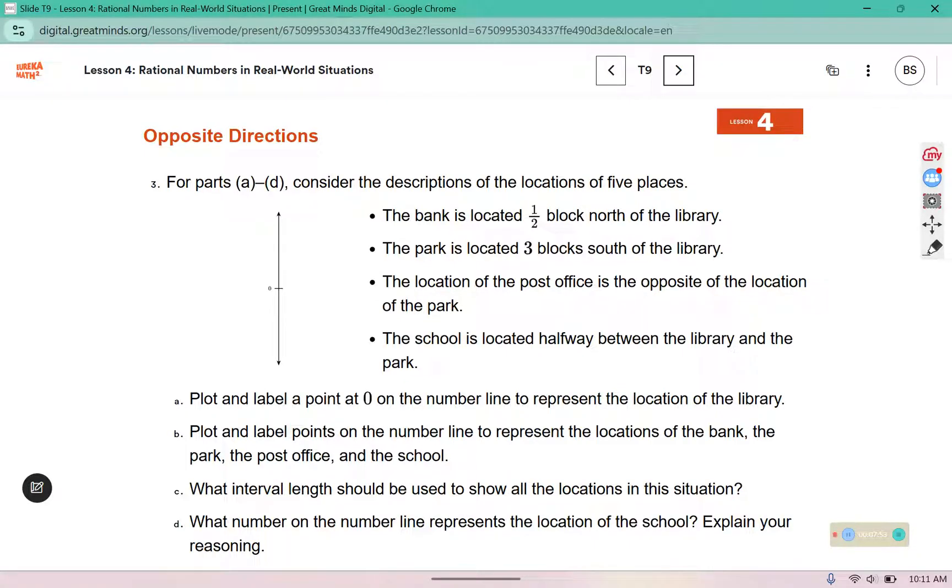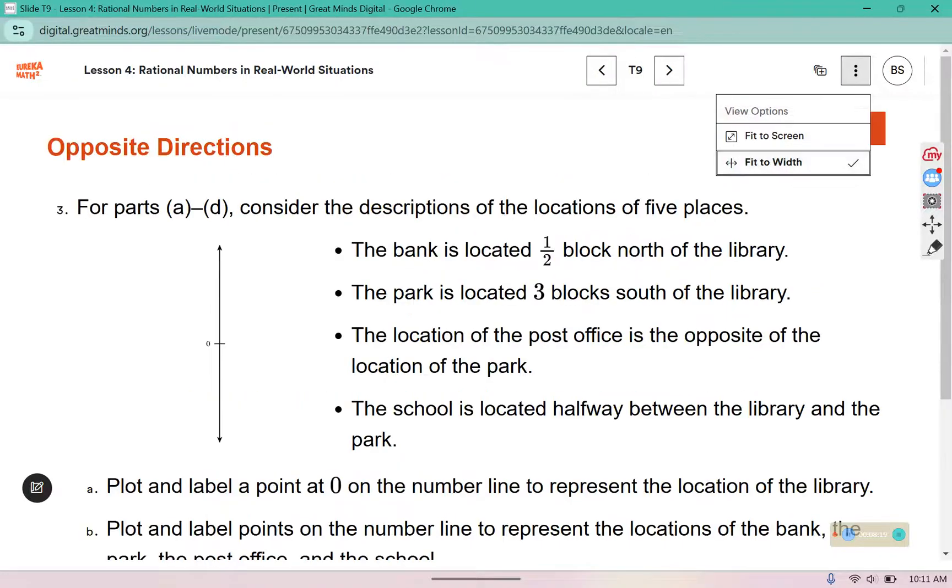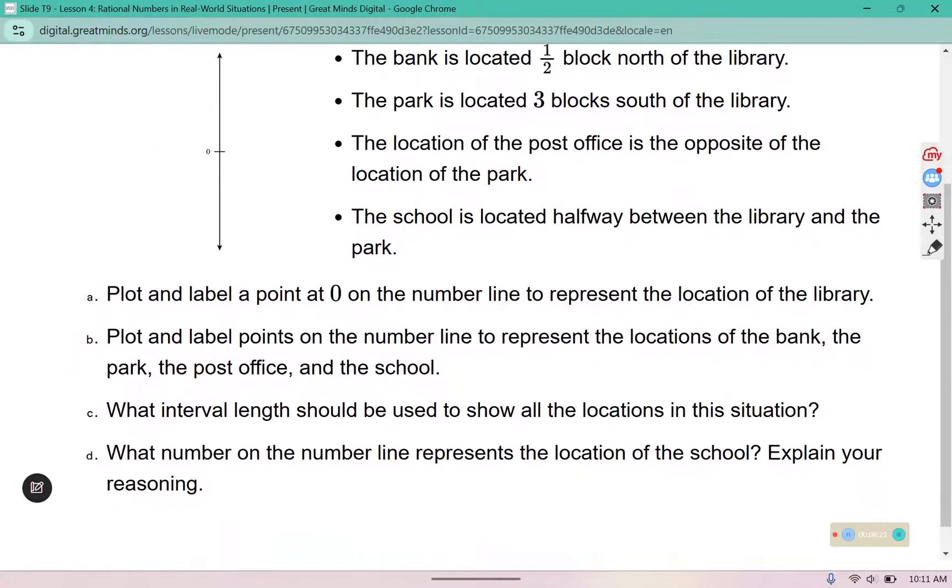For parts A through D consider the descriptions of the locations of five places. The bank is located a half block north of the library. The park is located three blocks south of the library. The location of the post office is the opposite of the location of the park. And the school is located halfway between the library and the park. A asks us to plot and label a point at zero on the number line to represent the location of the library. So we're going to start there. This represents the library.